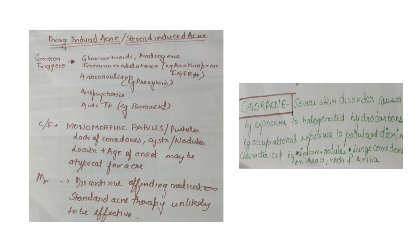Two important topics in Step 2 CK are drug-induced acne, also called steroid-induced acne. Drugs such as glucocorticoids, androgens, immunomodulators, anticonvulsants, antipsychotics, and anti-TB medications can lead to acne. This type of acne always presents as papules and pustules — never comedones, cysts, or nodules. The location and age of onset may be atypical. For treatment, we discontinue the offending agent and use standard acne therapy.